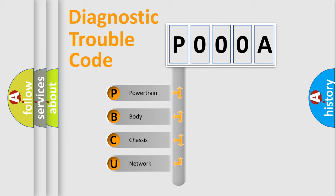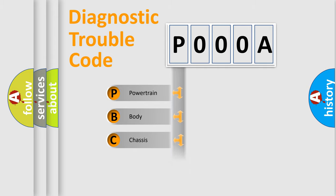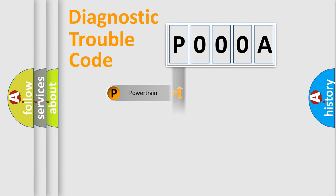We divide the electric system of an automobile into four basic units: Powertrain, Body, Chassis, and Network. This distribution is defined in the first character of the code.